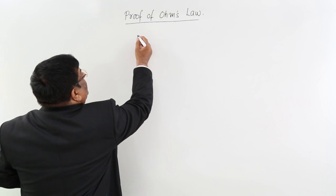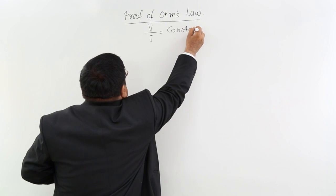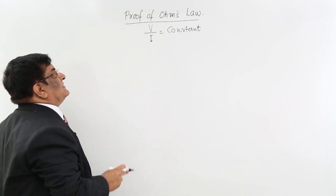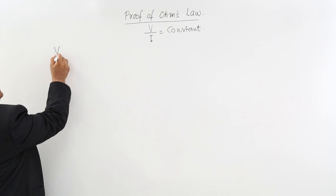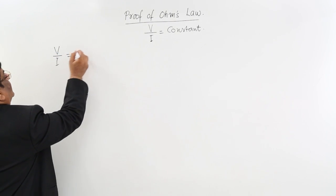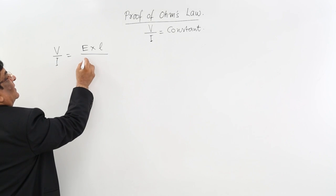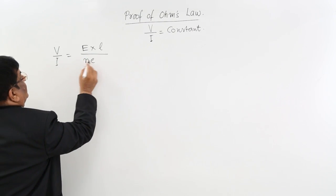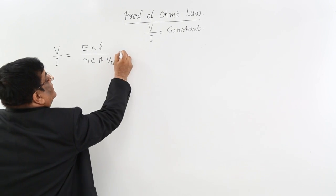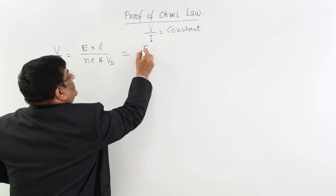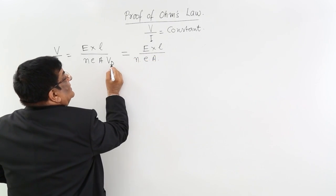Ohm's law says that V upon I is a constant. Now we will prove what V upon I actually means in terms of electron charge. V upon I equals electric field multiplied by length, divided by I, where I equals N·e·A·v_d — that is, N (number density), charge of electron, area of conductor, and drift velocity.